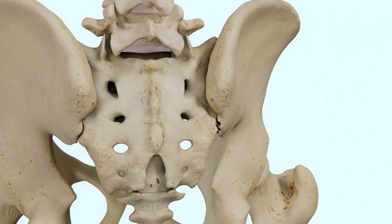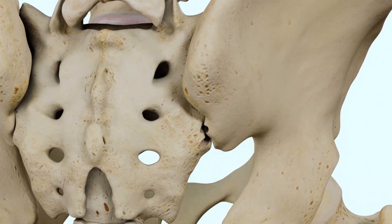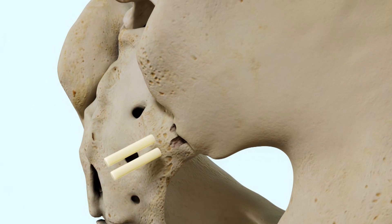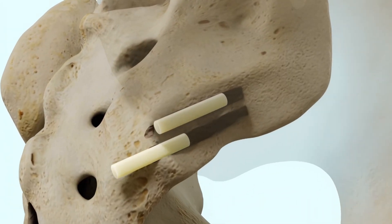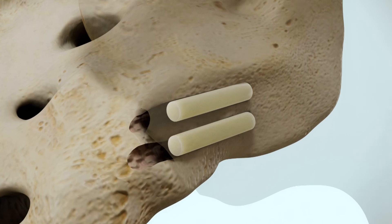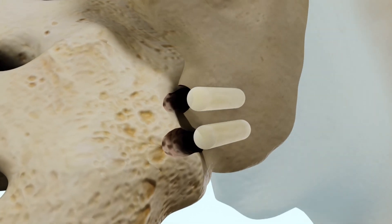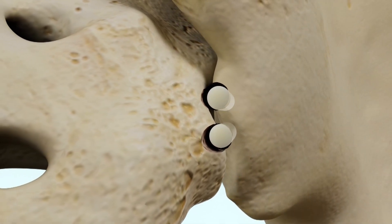Through a small incision in the lower back, two cylindrical allograft implants are inserted into the SI joint through a bone access needle. The allograft implants are designed to provide immediate stabilization and promote SI joint fusion.